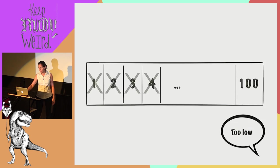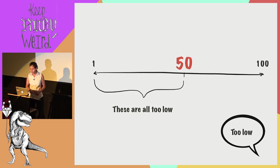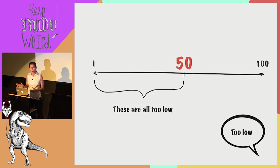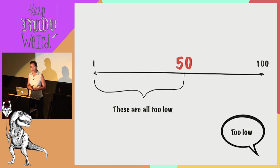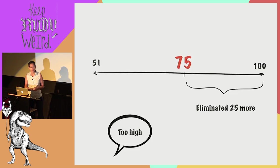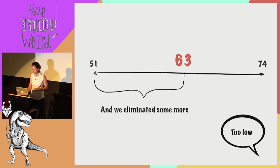A better approach: you ask me if it's 50. If I say it's still too low, we've already eliminated 50 numbers from our search. Next, we take the middle of the remaining range — between 50 and 100 — and ask if it's 75. If I say too high, we've eliminated another 25 numbers. We repeat until we find the answer. So if we start with a hundred numbers, the first step eliminates 50, then 25, then 13, then 7, then 4, then 2, then 1 — getting to our answer in seven steps.